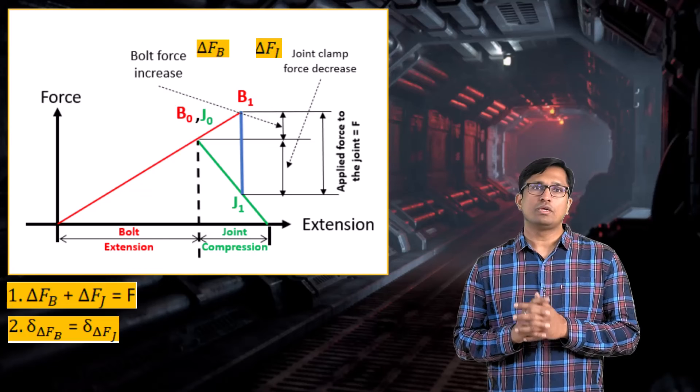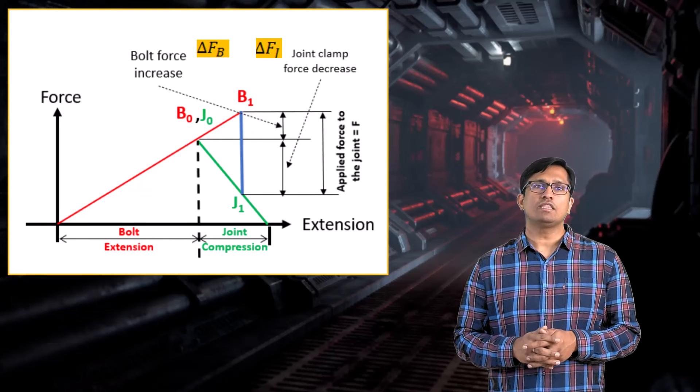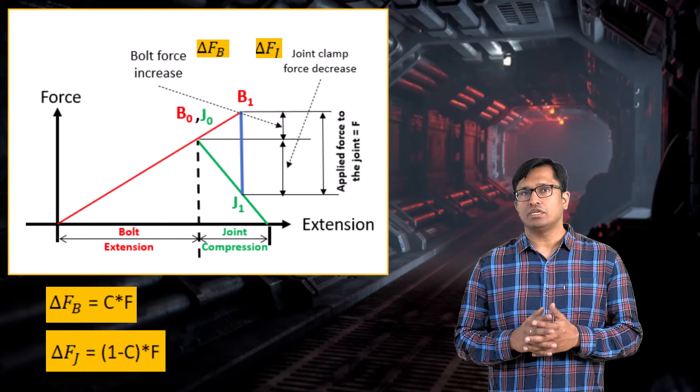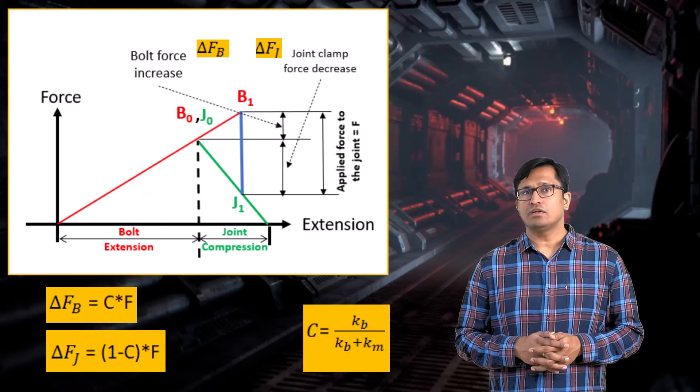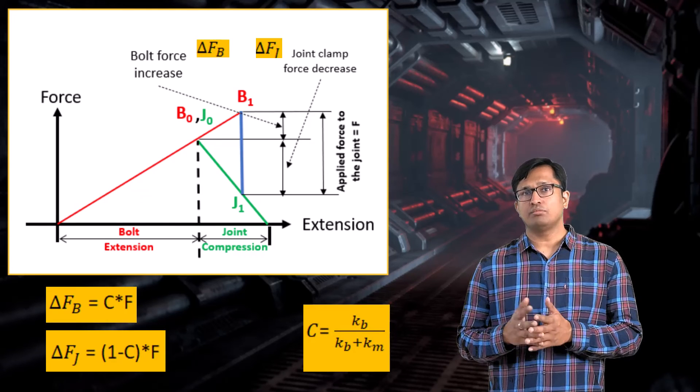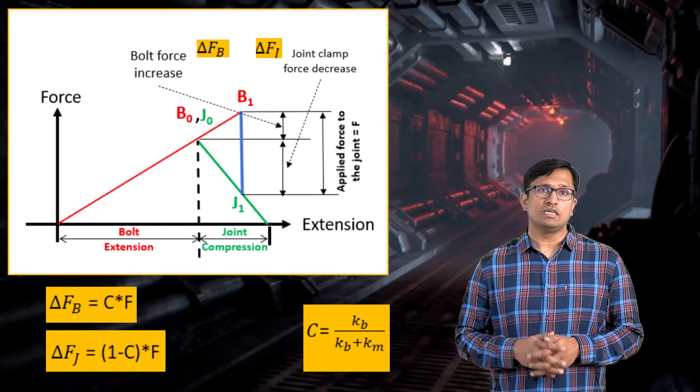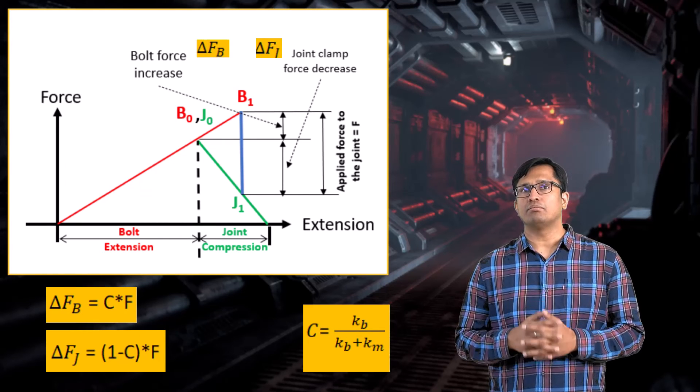By solving the two equations simultaneously, we can calculate delta Fb and delta Fj. Here, C is the fraction of the external load carried by the bolt while 1-C is the fraction of the external load carried by the members.